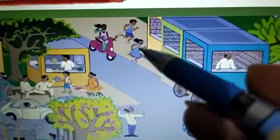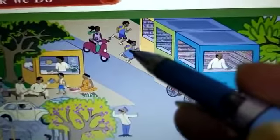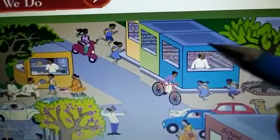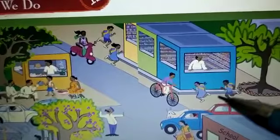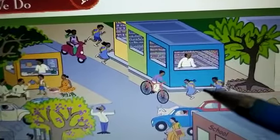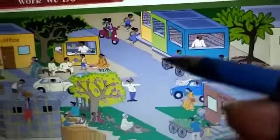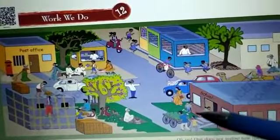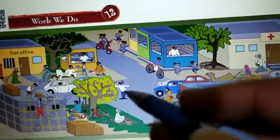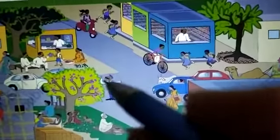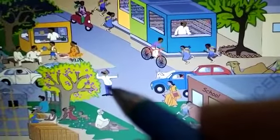Some children — school students — are running. Here is a shop and a shopkeeper. These are also students who are running. Here is a busy road where some vehicles are passing through and a traffic policeman is also standing here, controlling the traffic.